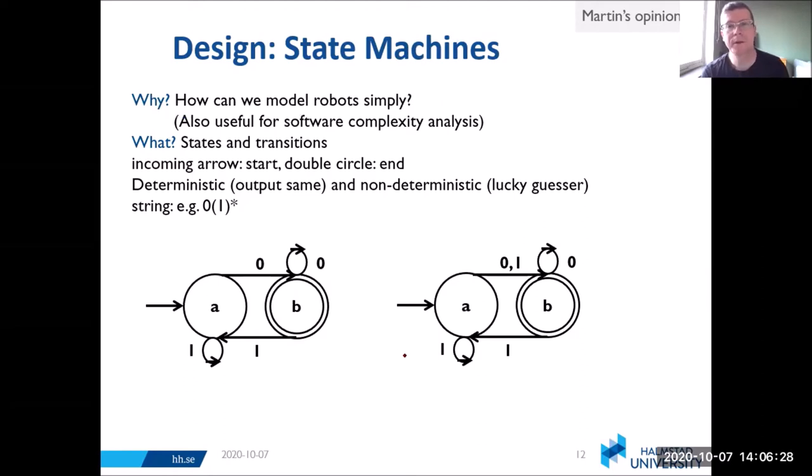What is this? We have states represented by circles and transitions represented by arrows. The start state is indicated by this incoming arrow, so our start state here is A. The end state is shown with a double circle, so our end state is B. An important concept is whether it's deterministic or non-deterministic. In a deterministic machine, the output will always be the same when you have some state and input. Non-deterministic means you will use the transition that is most likely to bring you to the end state. Here on the left we have a deterministic state machine. On the right we have a non-deterministic state machine.